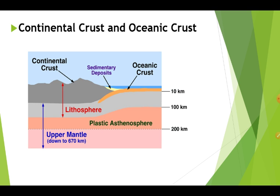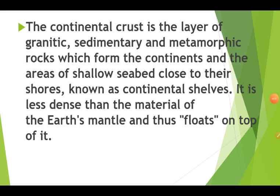The topmost layer, about 500 meters thick, includes lavas made of basalt. Now, continental crust: the continental crust is a layer of granitic, sedimentary and metamorphic rocks which form the continents and the areas of shallow seabed close to their shores, known as the continental shelf. It is less dense than the material of the earth's mantle, and thus floats on top of it.